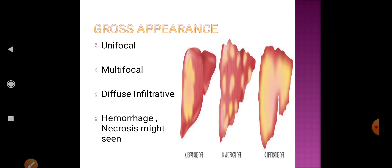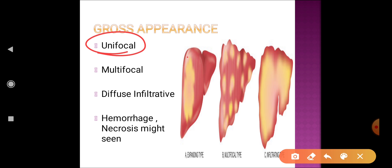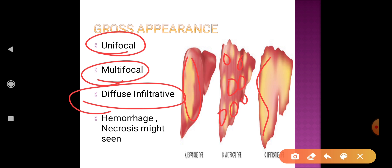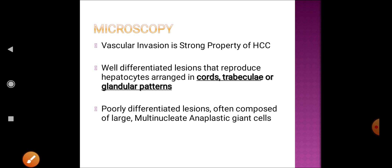The gross appearance of hepatocellular carcinoma takes three forms: unifocal (a single nodule), multifocal (multinodular), or diffuse infiltrative involving the whole liver. Whenever there is a cancer, hemorrhage and necrosis can also be present. This covers the gross appearance of hepatocellular carcinoma.